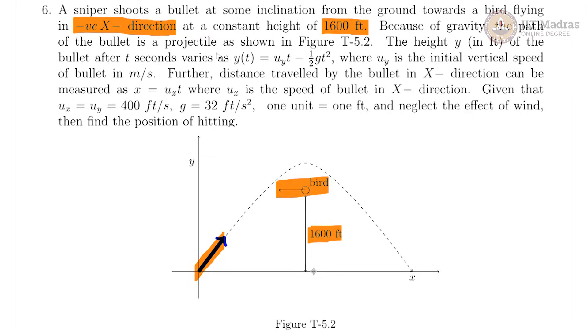Now, they have given the height y of the bullet at t seconds as this function. This is a quadratic function y equals u_y times t minus half g t squared, where u_y is the initial vertical speed and that is also given here as 400 feet per second, and the value of g is 32 feet per second squared.